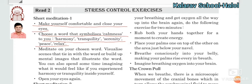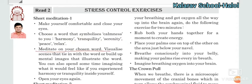Close — એ word પસંદ કરવાનું છે. Calmness એટલે શાંતતા, Harmony નો મતલબ સમવાદિતા, Tranquility નો મતલબ ગંભીરતા. તમે જે શબ્દ પસંદ કરેલો છે એના ઉપર તમારું ધ્યાન કેન્દ્રિત કરો. Visualize a scene that ties in with the words or build up a mental image that illustrates the word.